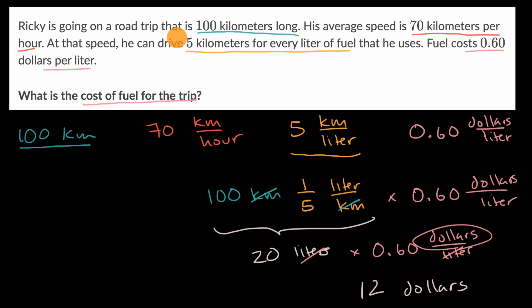And I know what you're thinking: wait, we didn't use the information that he's traveling an average speed of 70 kilometers per hour. It's true. We did not use that in our calculation, although it was kind of useful because we had to know what his fuel efficiency is at that speed. So they're saying they're traveling at 70 kilometers per hour and then at that speed, we get this fuel efficiency. They could have just told us at whatever speed he's going, his fuel efficiency is this, and we still would have been able to figure out the total cost of the fuel for the trip.